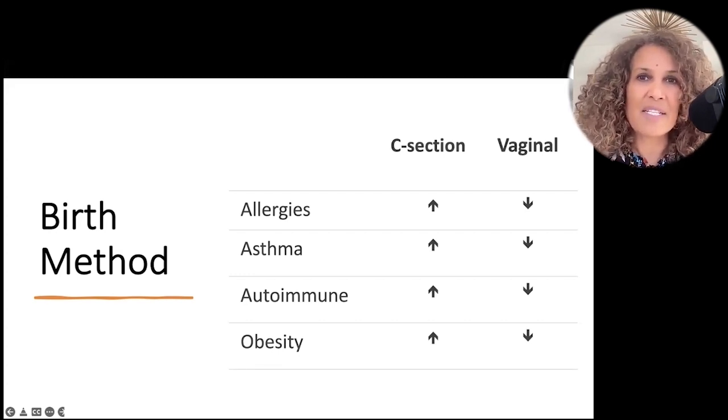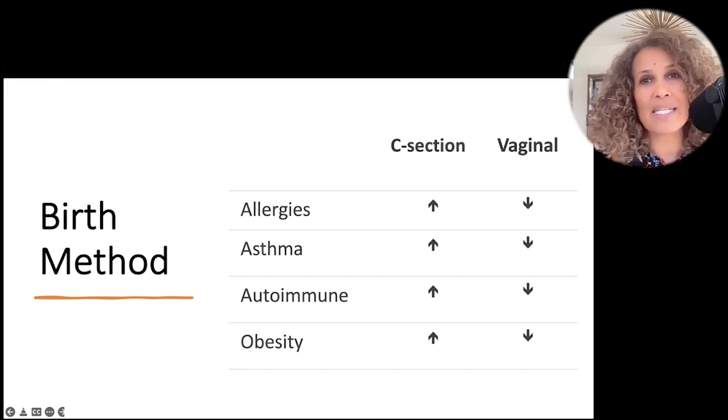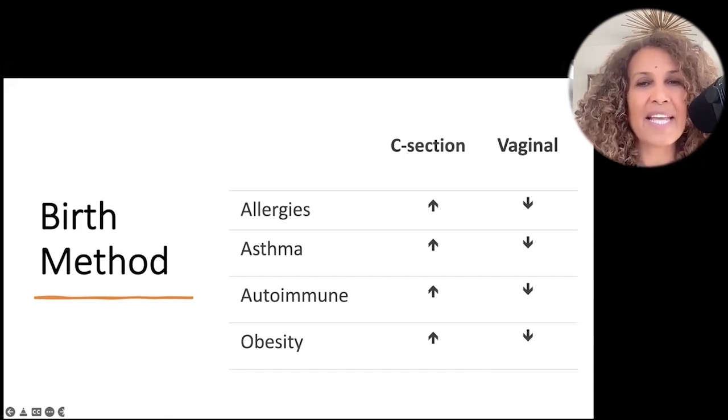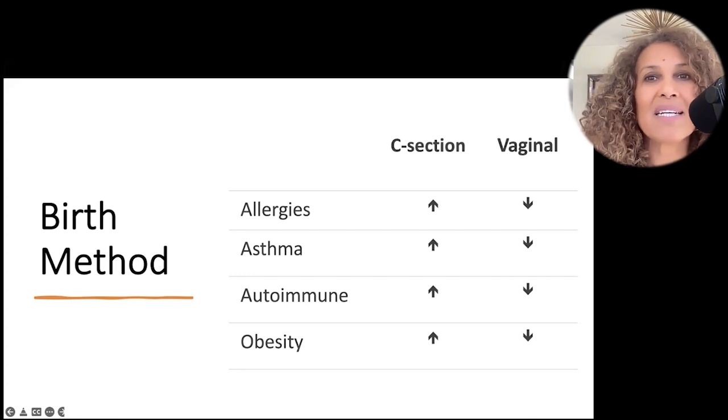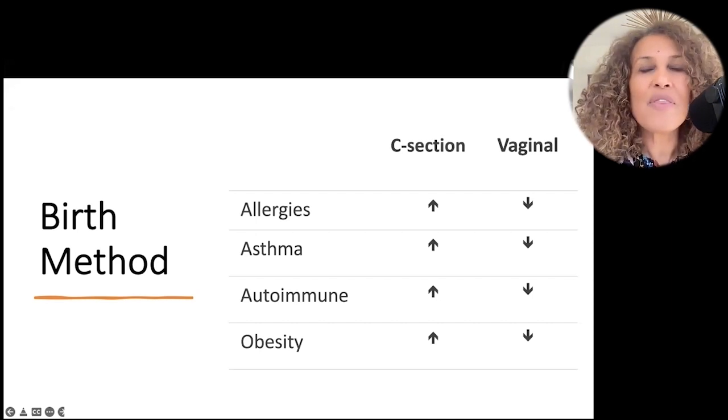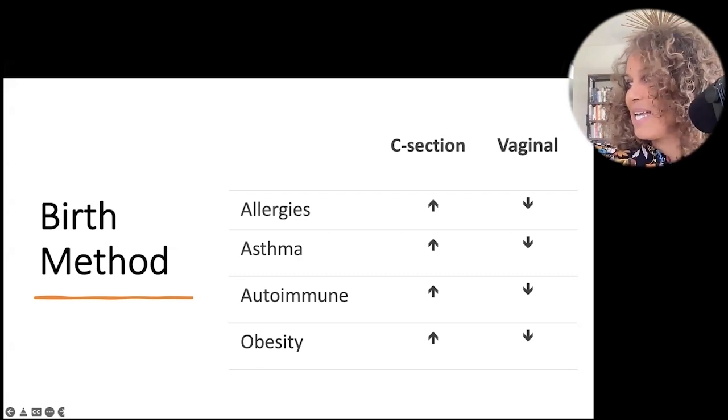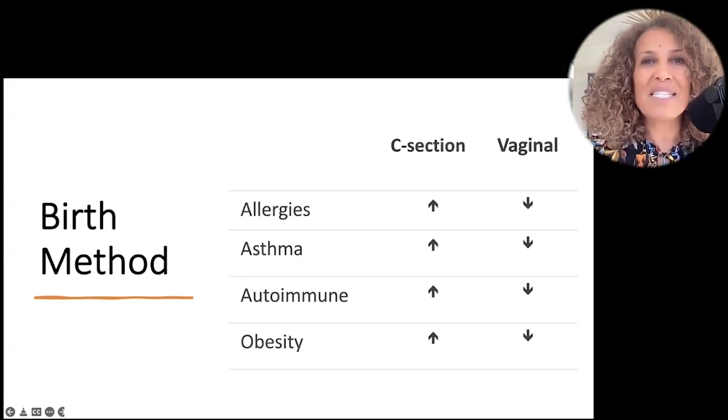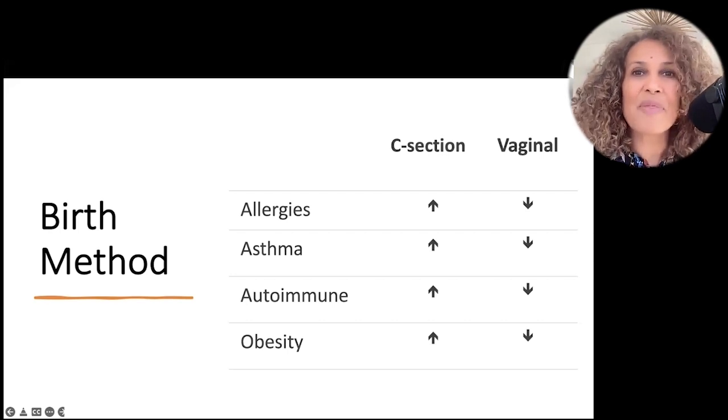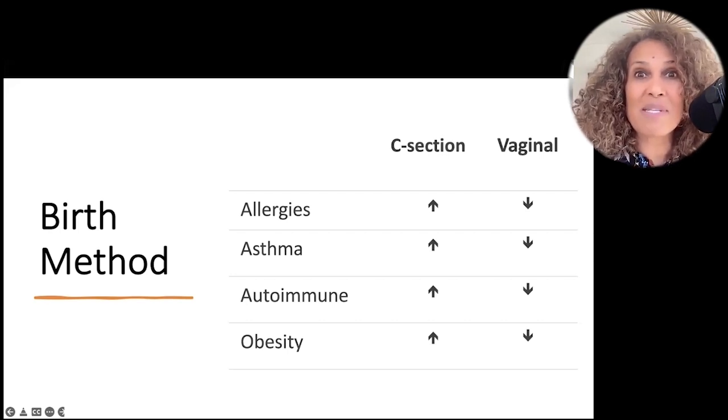This difference is not just for birth. It also translates into breastfeeding. The third most common ingredient in breast milk is something called an HMO, human milk oligosaccharide. And human milk oligosaccharides are completely indigestible by babies. So why would the third most common ingredient in breast milk be something that a baby cannot digest? It's because it's not there to feed the baby.